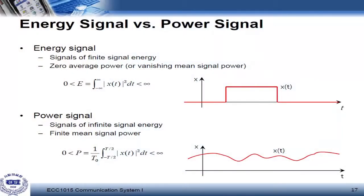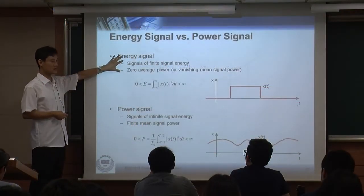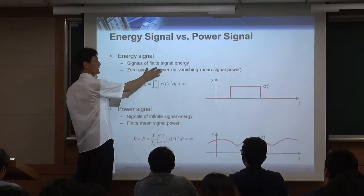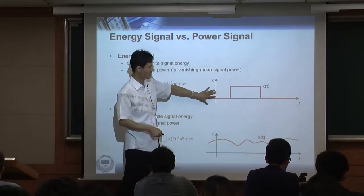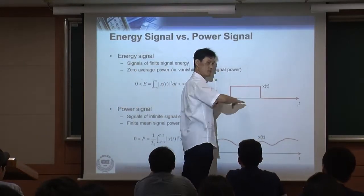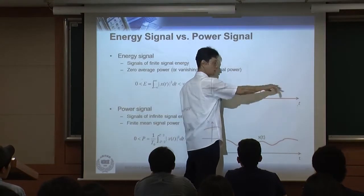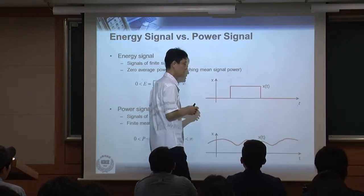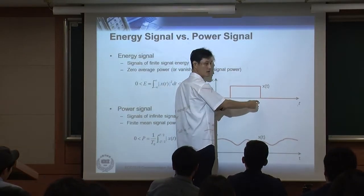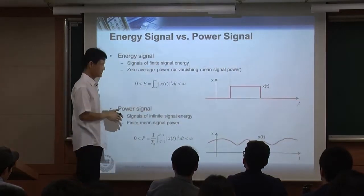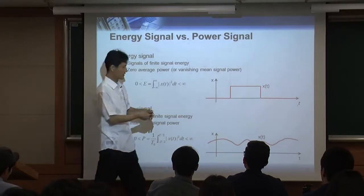Another basic terminology: we have two different kinds of signals — energy signals and power signals. Energy signals are signals with finite signal energy and also zero average power. Think of a signal that has non-zero values only within a limited time range and is zero everywhere else — that signal has finite energy because all the energy is concentrated in that interval.